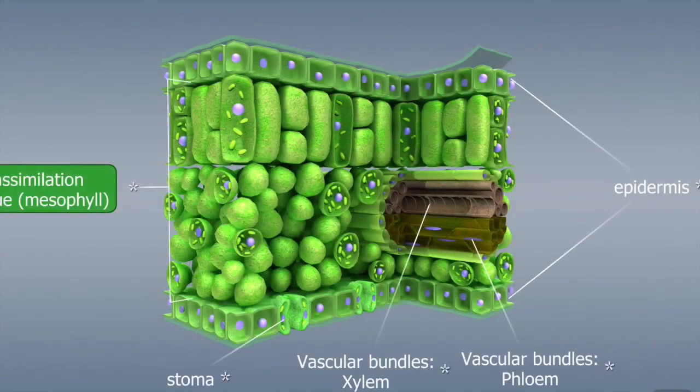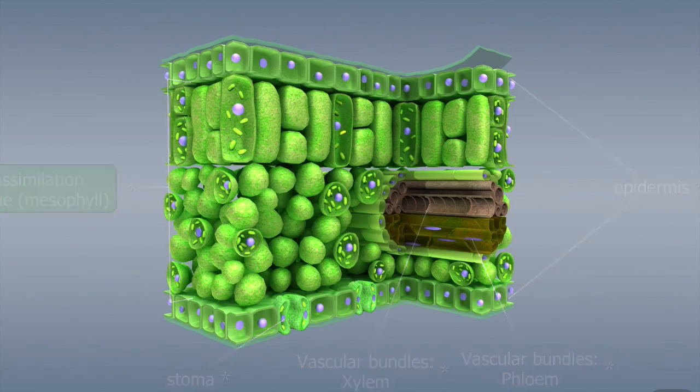Photosynthesis takes place in the green parts of plants, that is, in the leaves, and often in the soft stem. The green color of plants results from the large amount of chloroplasts in the cells of the assimilation tissue.